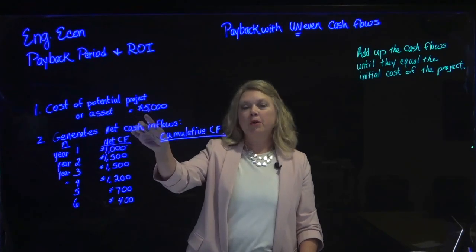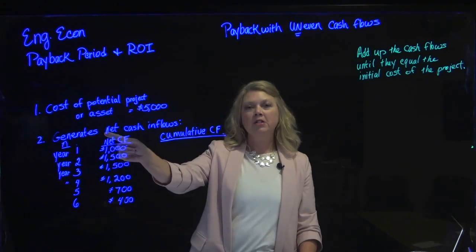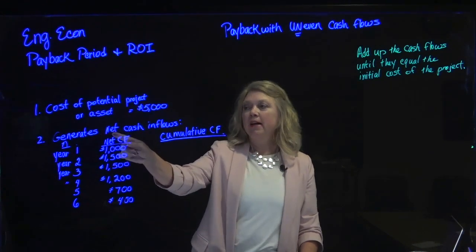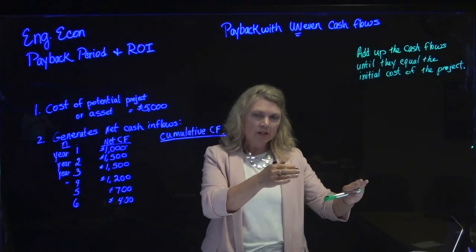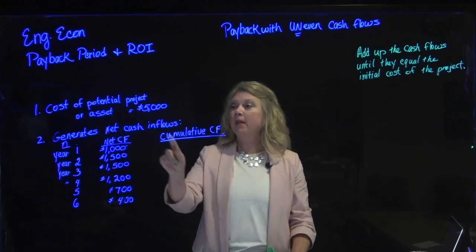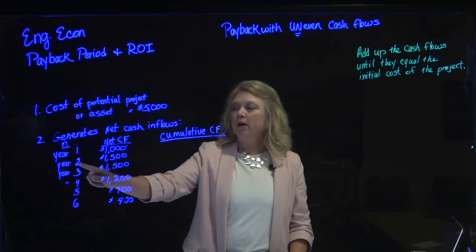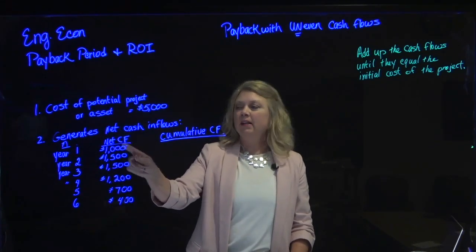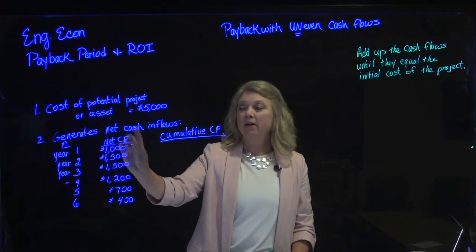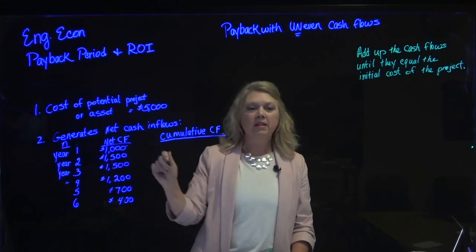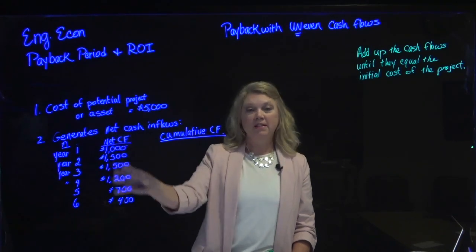The cost of the potential project or asset is $5,000. It has a six-year life, and the project is anticipated to generate net cash inflows — cash coming in minus cash going out to get to net cash flows each year. N is used to designate the year, year one through six. The net cash flows each year are in the column here: $1,000 net will come in by the end of year one, $1,500 in year two. That's what this $5,000 project generates in net cash inflows.